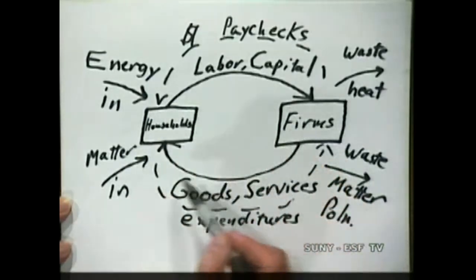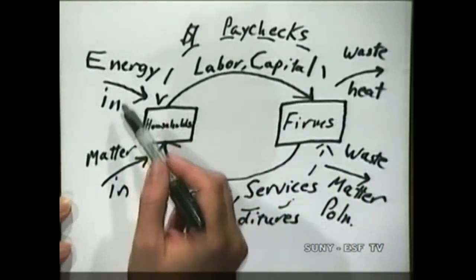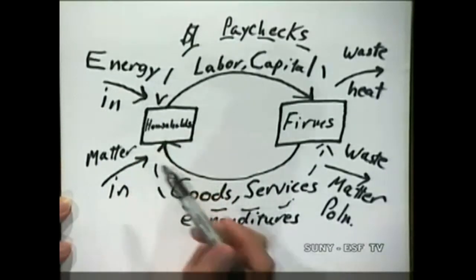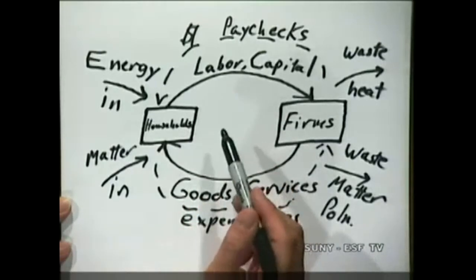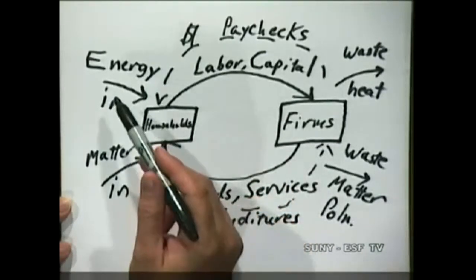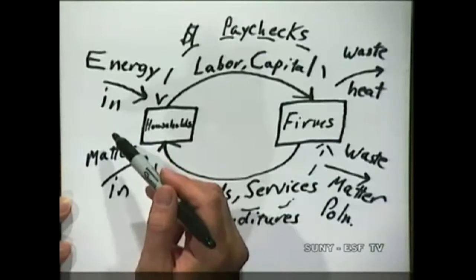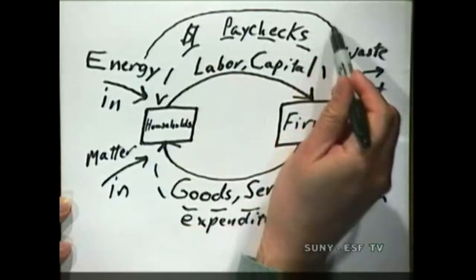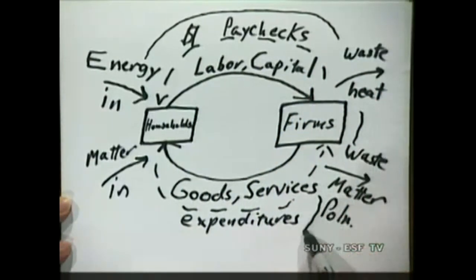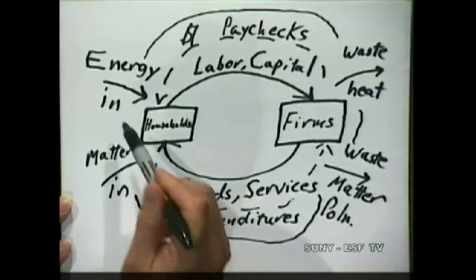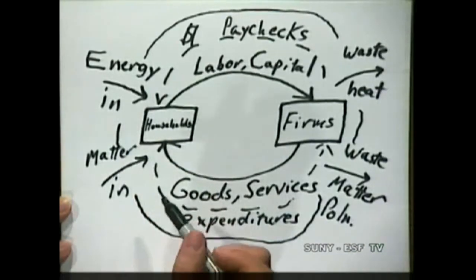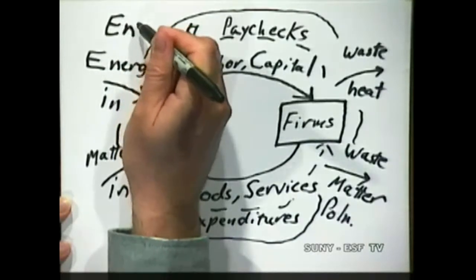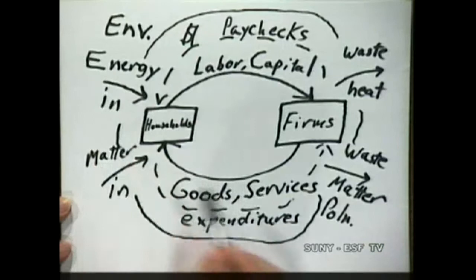This is starting to make more sense. Here's a question: where is this stuff coming from? Where are these resources — energy and matter — coming from? Does the economy make it? No, of course not. This stuff comes from the environment. So what we have to do is draw a circle around all this stuff. These new boundaries account for the environment. These things come from the environment, and these wastes go back to the environment.